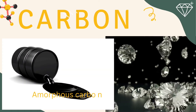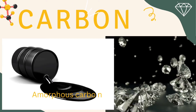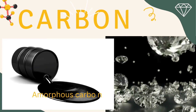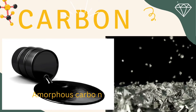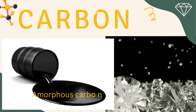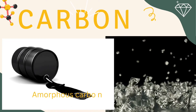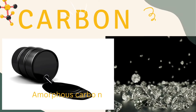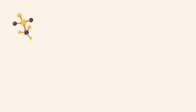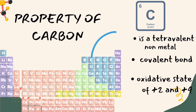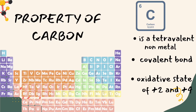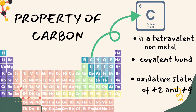We already know that carbon has two major forms of allotropes — the crystalline and the amorphous form of carbon, which is not considered to be true allotropes. We are going to concentrate on the amorphous form of carbon, beginning with coke today. Carbon belongs to group 4, period 2 of the periodic table, and it has a valency of 2 and 4.